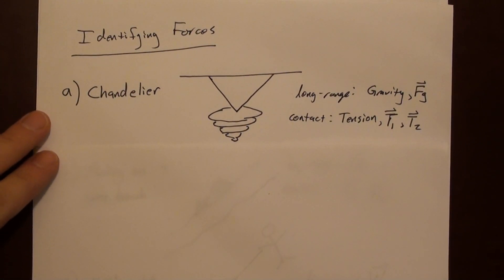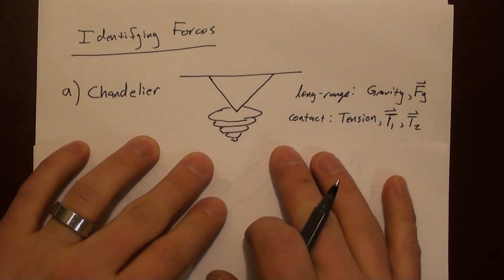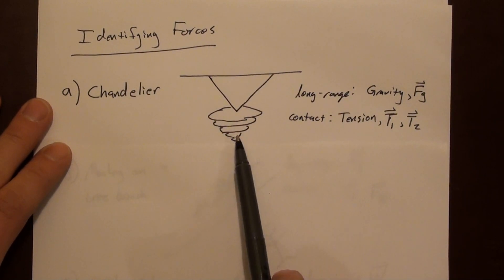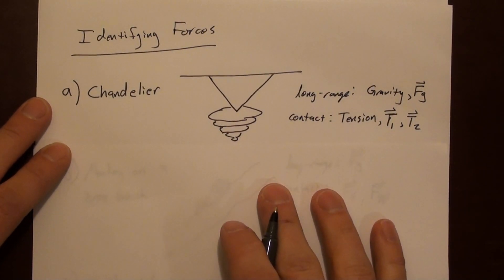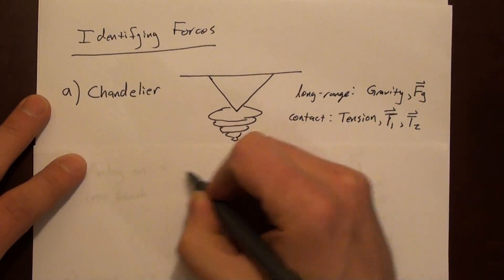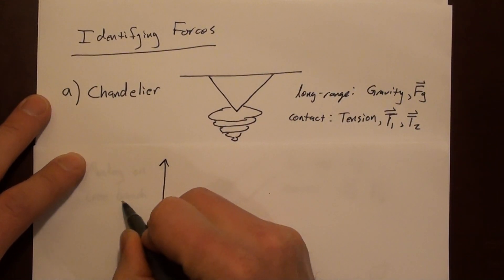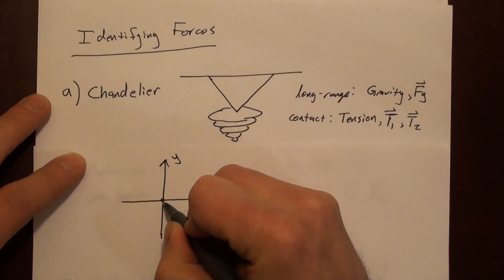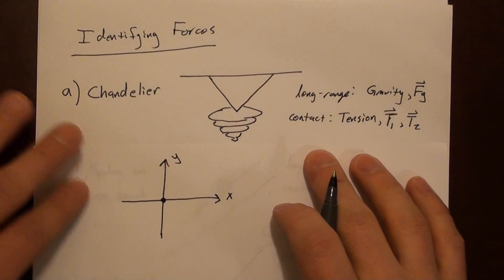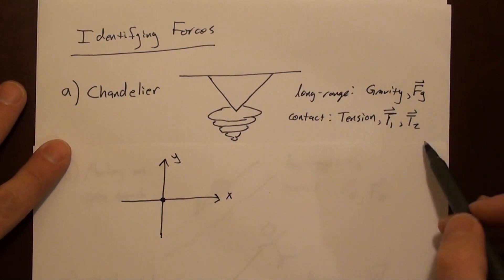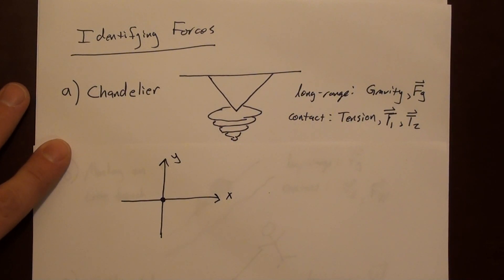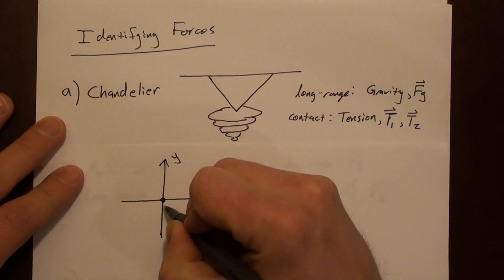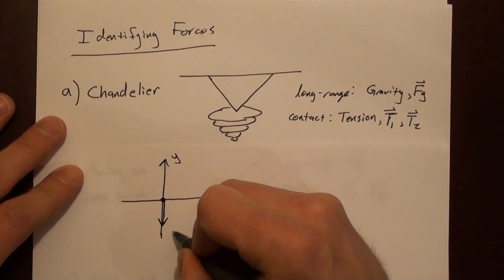Here's the first situation: a chandelier. We've already identified three forces — gravity and the tension from the two ropes touching the chandelier. We draw a set of axes straight up and down, label them x and y, and place the chandelier at the origin. Then we draw the three forces as vectors. Gravity points directly downward — that's F sub g.